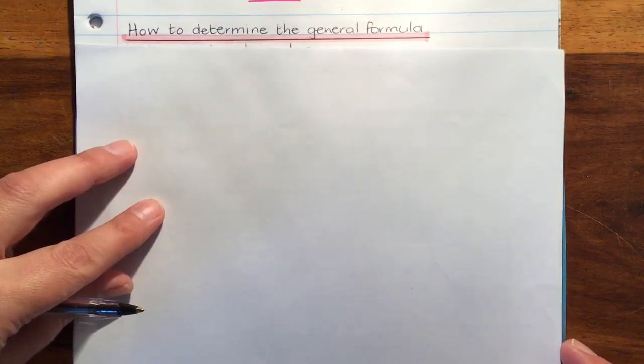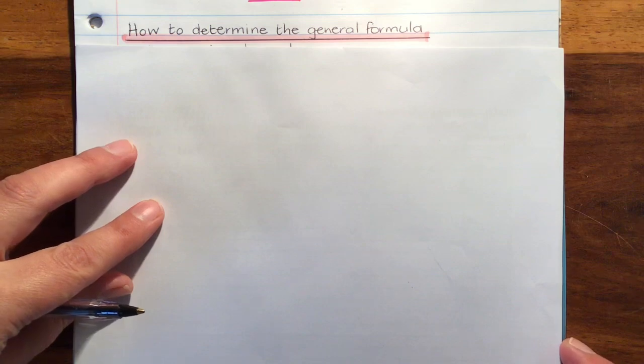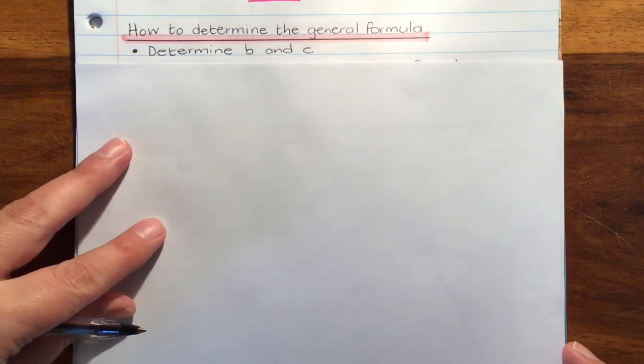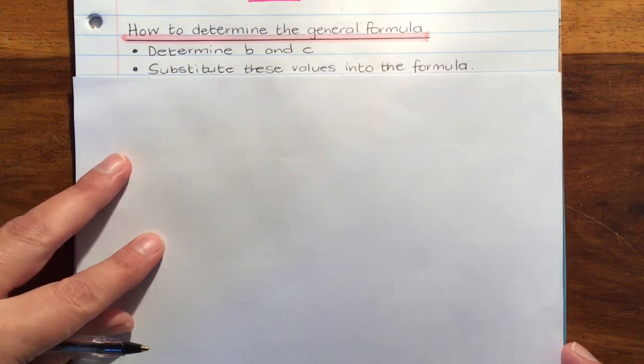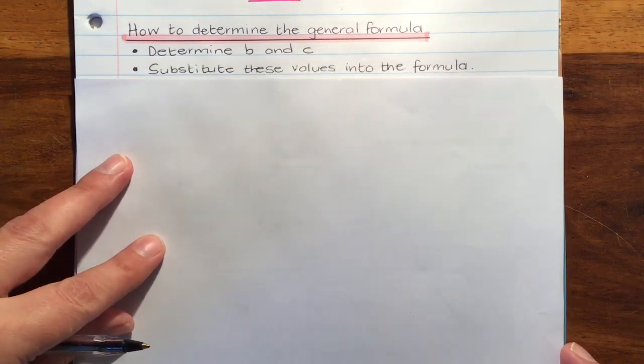How do we determine the general formula? We first determine the values of B and C, and then we substitute these values into the formula. Let's try an example.